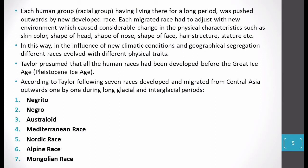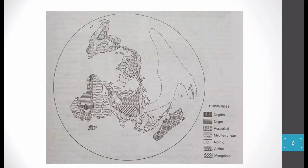Taylor believes that human races moved from the place where they first developed. Taylor said that seven races developed, which migrated outwards from Central Asia one by one in stages. Generally it is said that Taylor mentioned that during long glacial and inter-glacial periods, the migration process occurred. Taylor's seven races are: Negrito, Negro, Australoid, Mediterranean, Nordic, Alpine, and Mongoloid. He represented all these races on a map, which you can see, showing their distribution clearly.